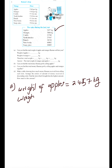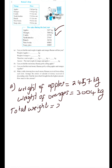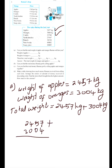The weight of oranges is 3004 kg. You have to find the total weight of apples and oranges. Total weight equals 2457 kg plus 3004 kg. Adding 2457 plus 3004: carry 1, 1, 6, 4, 5 — so 5461 kg.